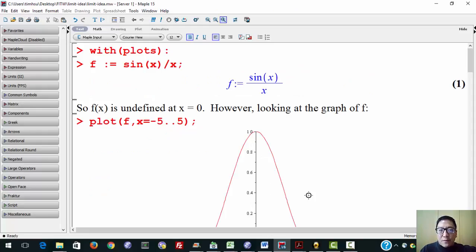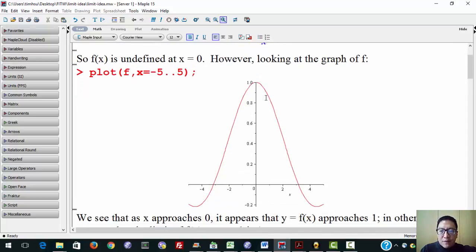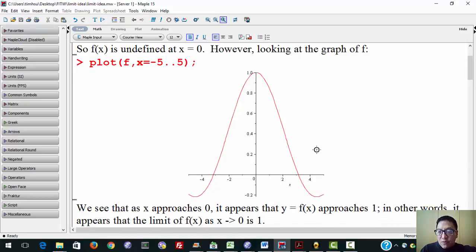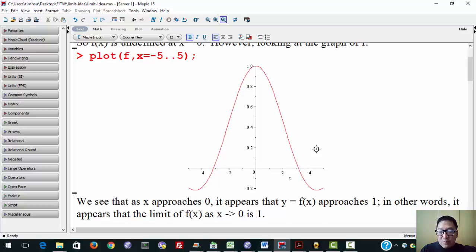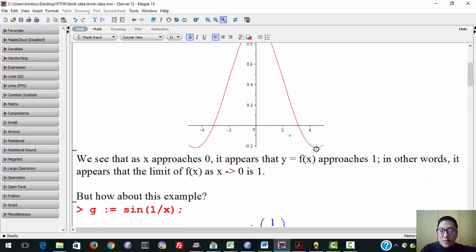Okay, now we're switched over here, we're looking at a graphing program, and let's look at the example f(x) equals sin(x) over x, which is undefined at x equals 0, but if you look at the graph of f, we see that as x approaches 0 from either the negative side or the positive side, the y value, the corresponding y value, approaches 1, so it appears that the limit of f(x), which is sin(x) over x, as x approaches 0 is 1.